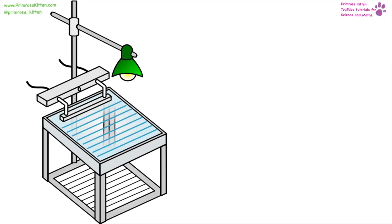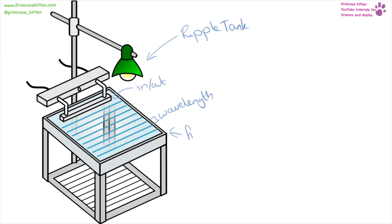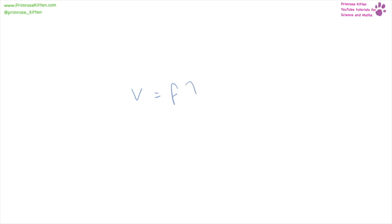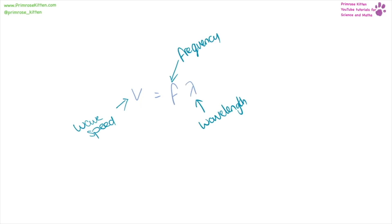If we want to measure the speed of a wave, we can use a ripple tank. The vibrating element goes in and out of the water creating waves. From this we can measure a wavelength and also count how many waves pass a certain point per second to get the frequency. Then we can use our equation to work out the speed of the wave: v equals f times lambda. Wave speed is in meters per second, frequency in hertz, and wavelength in meters.